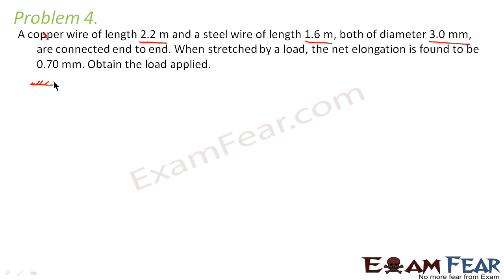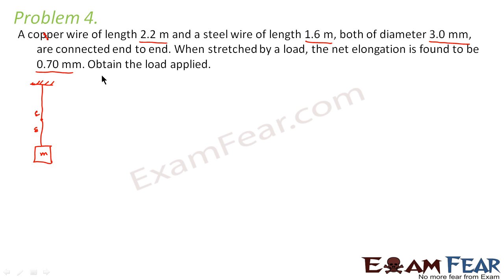Let us suppose this is a copper wire connected end to end to another wire made of steel. Both have the same diameter of 3 millimeters. When stretched by a load, the net elongation is found to be 0.70 millimeters — meaning when we attach a mass of m kg here, the entire string gets stretched by 0.70 millimeters. We have to find the load applied.